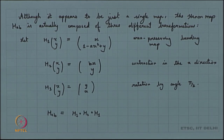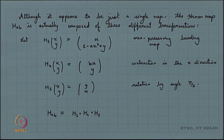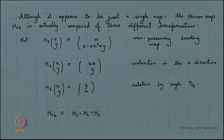This is what gives us the Hennon map. Let us look into another aspect: the Hennon map is invertible.